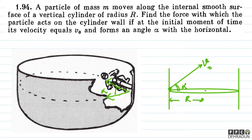तो जो horizontal plane में circle था, उसको आप imagine कर सकते थे, अब यह shift होकर थोड़ा और ऊपर हो जाएगा। Velocity V0 और angle alpha दे रखा है, तो आप समझ पा रहे हैं कि यह सिर्फ एक horizontal circle नहीं बना रहा — यह अपने horizontal circle को change करेगा और ऊपर वाले circle का हिस्सा होने वाला है। इस moment पर यह इस particular circle का हिस्सा है।